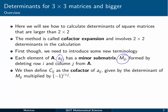So that's the minor submatrix. We then define another quantity, Cij, as the cofactor of aij. And it's given by the determinant of the minor submatrix Mij multiplied by this funny looking thing, minus 1 to the power i plus j.